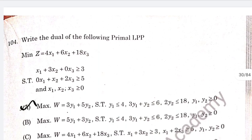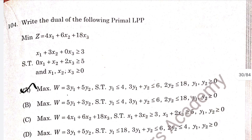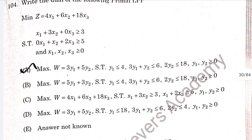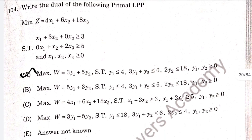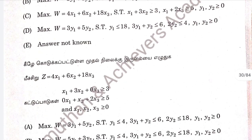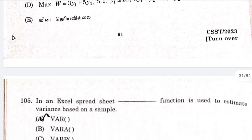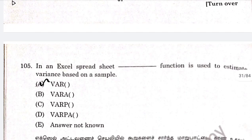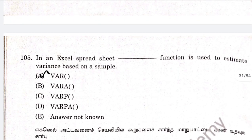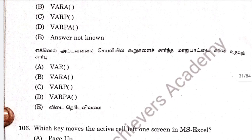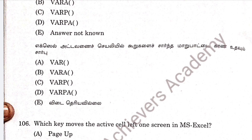Question 104, duality, option E. Question 105, this is an Excel-based problem on variance. Option E, B.